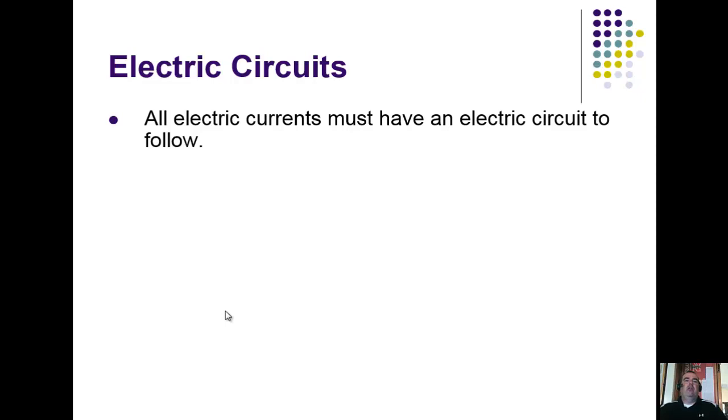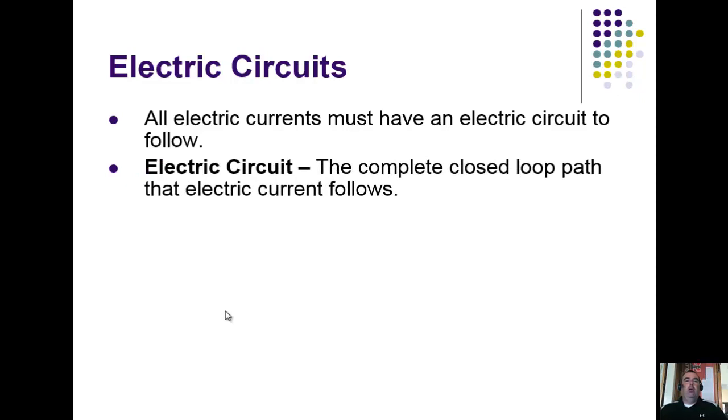Electric circuits. All electric currents must have some sort of circuit to follow. An electric circuit is just that complete—key thing here is closed—closed loop path that electric current is going to follow. Electric current can't jump the gap. It has to have that complete closed loop path for current to follow. In order for an electric circuit to be complete, I say you have to have four components.